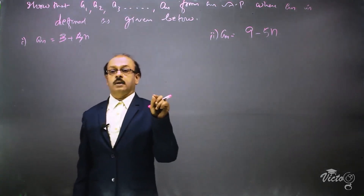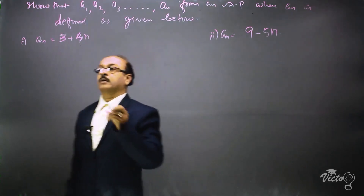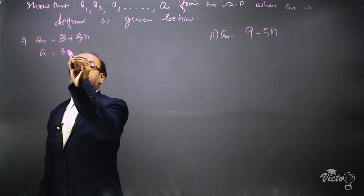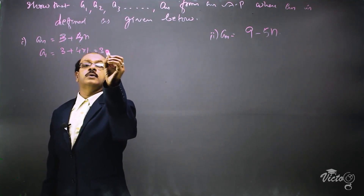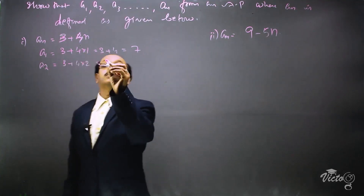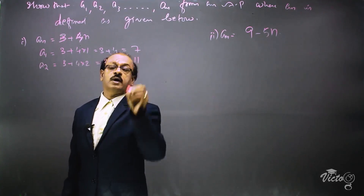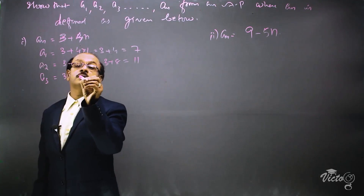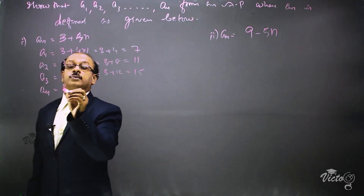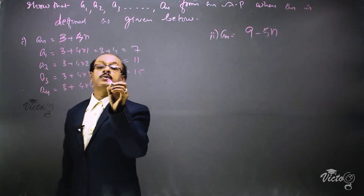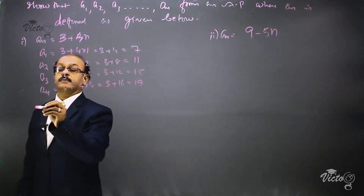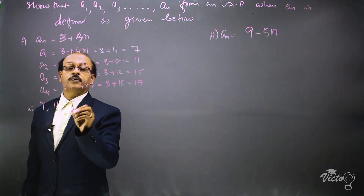For the first case, a1: substituting n=1, we get 3 + 4×1 = 3 + 4 = 7. Now a2: 3 + 4×2 = 3 + 8 = 11. Now a3: 3 + 4×3 = 3 + 12 = 15. And a4: 3 + 4×4 = 3 + 16 = 19. So we are obtaining a1, a2, a3, a4 as 7, 11, 15, 19.